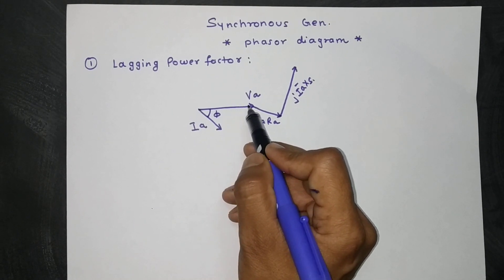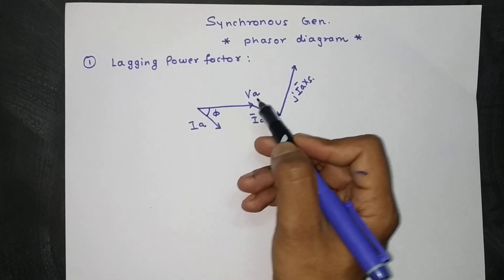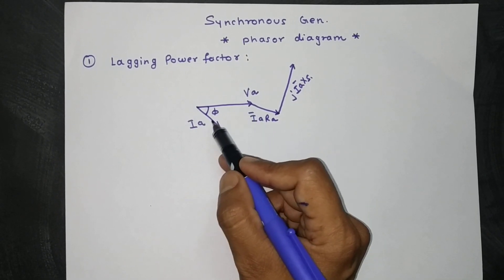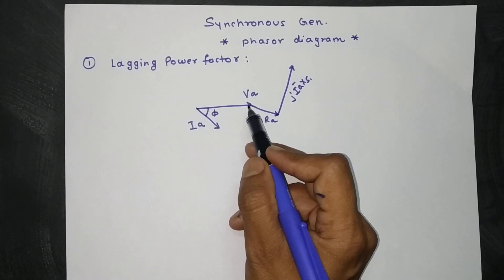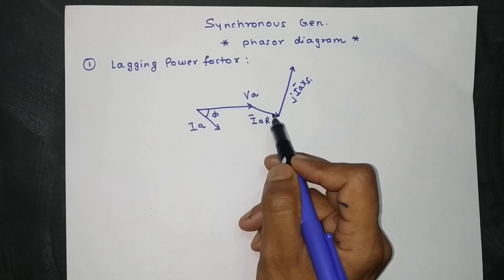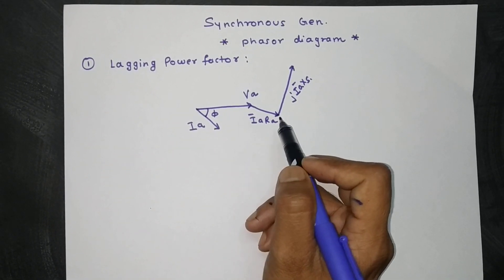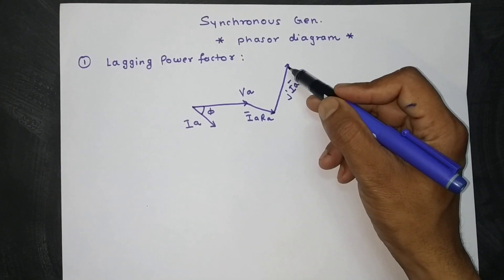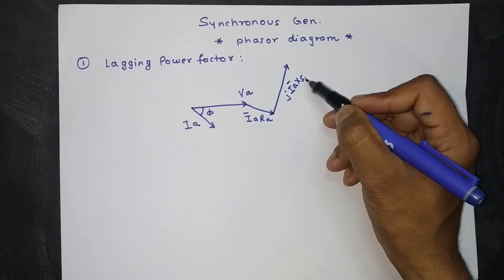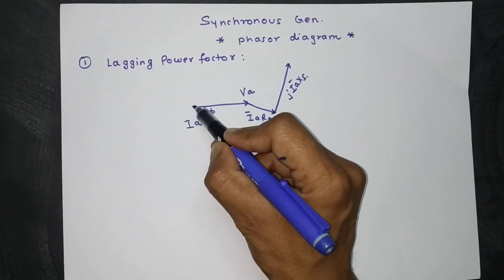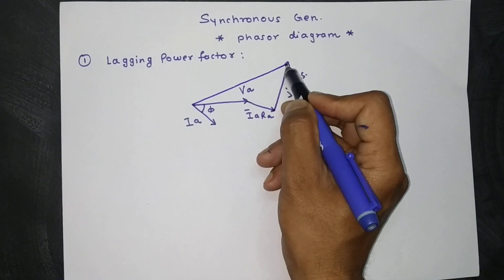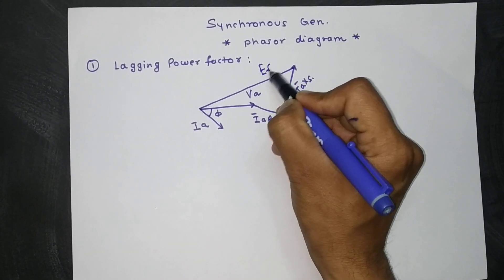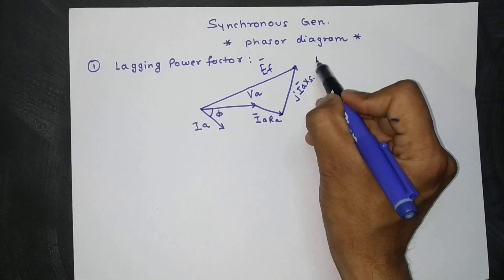First we will draw a reference of terminal voltage VA, then IA will be lagged by phi degrees. The IA·RA drop will be along the same reference line as IA, then it will be connected to the reactance drop j·IA·Xs, so the resultant will be the excitation voltage EF.